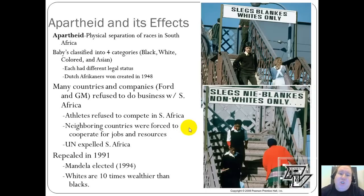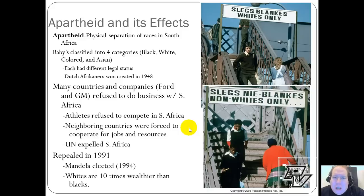The most extreme example of racism and anti-ethnicity was apartheid in South Africa — the physical separation of races, actually put into law. When a baby was born, they would be classified into one of four categories: black, white, colored, or Asian — with 'colored' meaning a mix of any two races. Each group had a different legal status and was treated differently. The Afrikaners, the more powerful Dutch entrants to the area, won those rights and created that constitution in 1948.